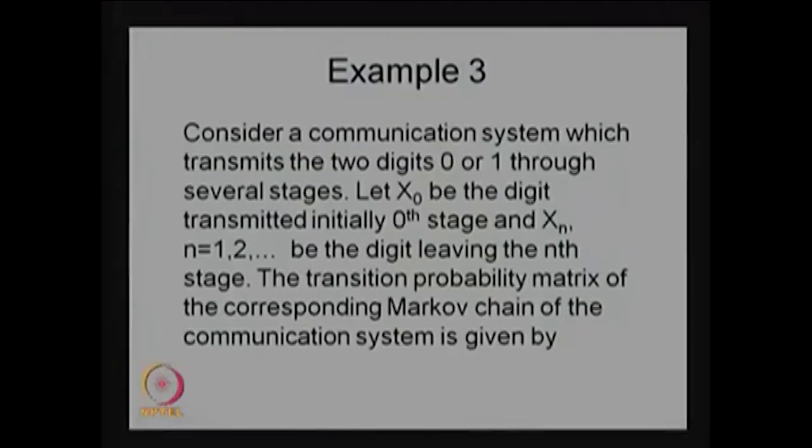The way each subsequent transmission takes place depends only on the last transmission, not on any previous stages. Therefore, this process satisfies the Markov property, and the stochastic process is called a discrete time Markov chain (DTMC).